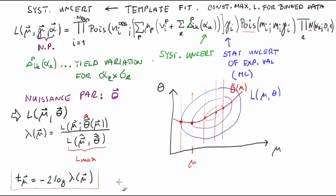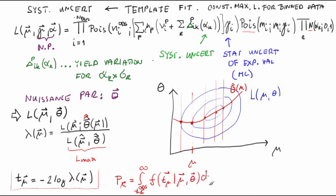The test statistic for the test with systematic uncertainties is defined as T_mu vector equals minus 2 times the logarithm of lambda(mu vector). This test statistic can be viewed as a distance between the hypothesis and the observed data: a high value of T_mu vector indicates high incompatibility of data with the hypothesis mu vector. The p-value is given by P_mu vector equal to the integral from T_mu vector observed to infinity of F of T_mu vector given (mu vector, theta vector), dT_mu vector, which equals P_mu vector of theta vector.